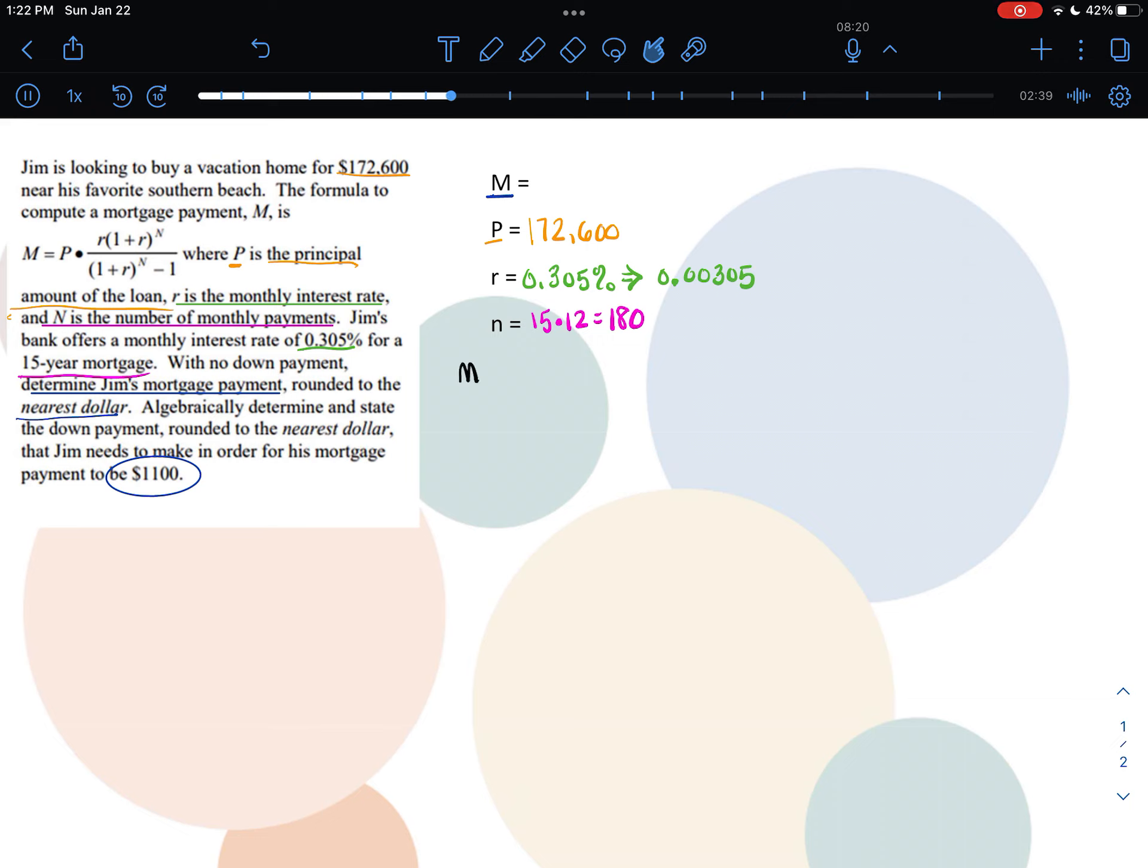I'm going to put this information in my formula, so I get M equals 172,600 times 0.00305 times (1 plus 0.00305) to the 180th power over (1 plus 0.00305) to the 180th power minus 1.